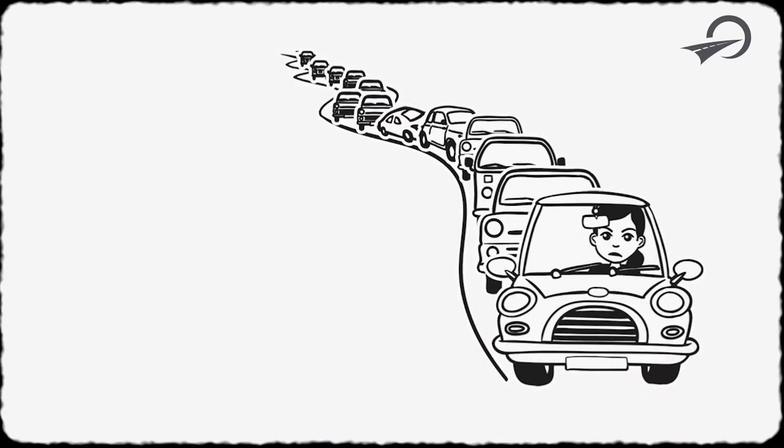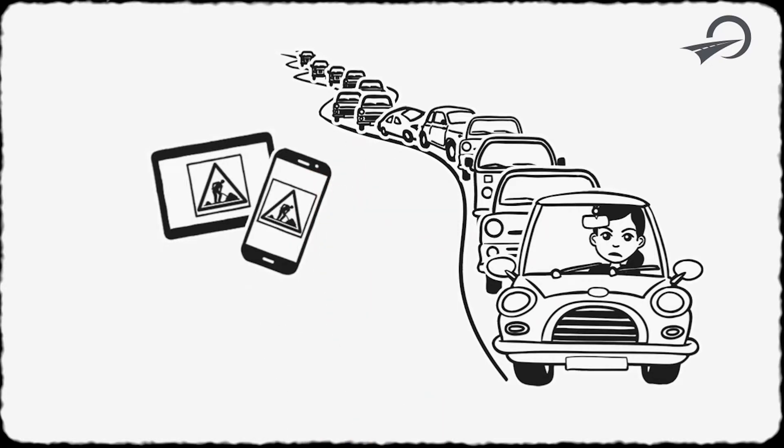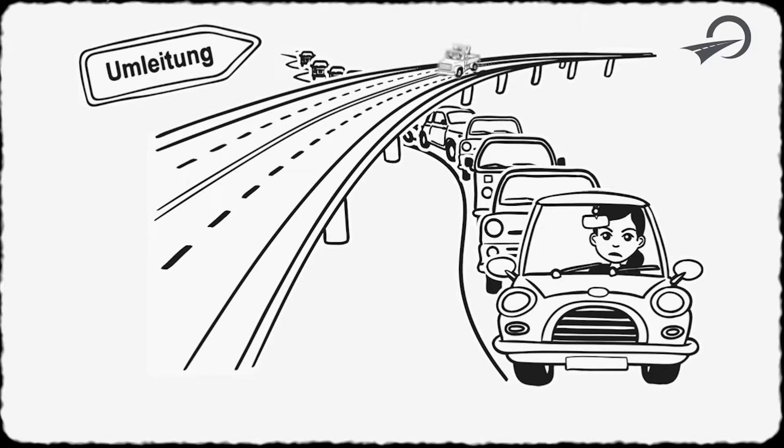However, Suzanne is not aware of it. Her GPS and smartphone app can only provide her the information about the pre-assigned completion date. Therefore, Suzanne will continue taking a detour for the next several days. She randomly finds out about the already finished road construction site.